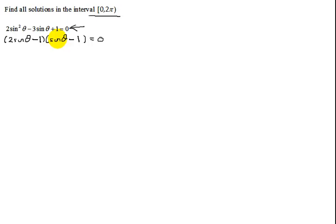2sinθ times sinθ is 2sin²θ. The middle two terms: the outer term 2sinθ times -1 is -2sinθ. Inner: -1 times sinθ is -sinθ. Those add up to -3sinθ. Last term: -1 times -1 is positive 1. So yes, this factored successfully.